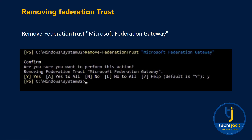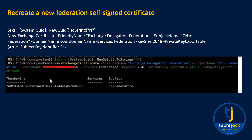The next step is to remove the federation trust. To do this, run the commandlet Remove-FederationTrust 'Microsoft Federation Gateway'. You can see the command in action. Now the federated domain is removed and the federation trust is also removed.